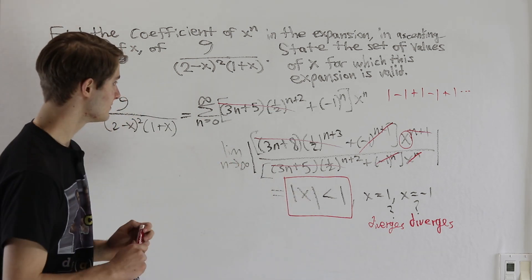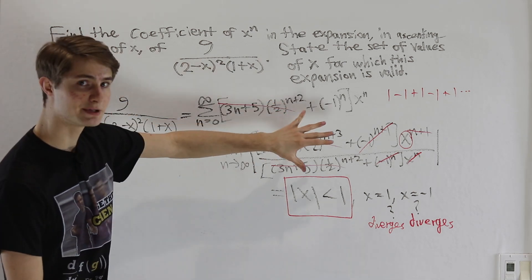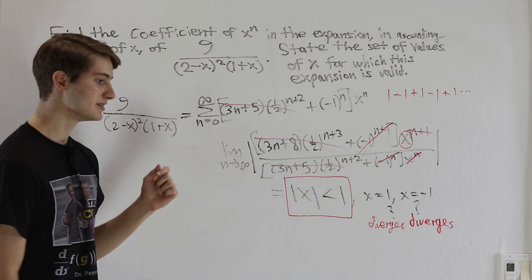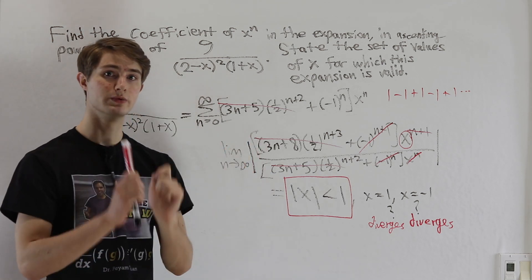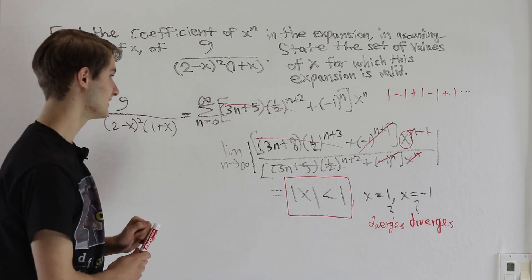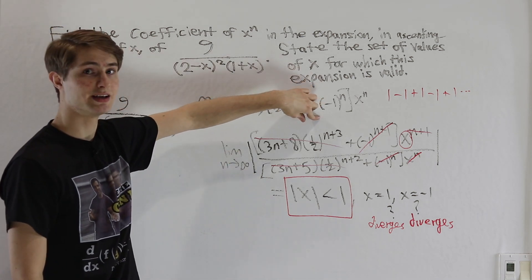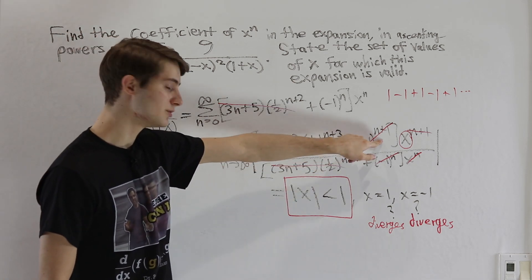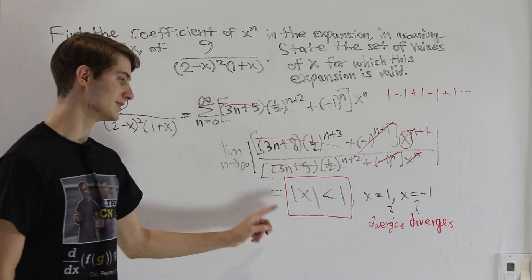When looking at these types of problems, especially with very complicated-looking expressions and limits, it helps to step back and think about which parts of the expression are really important and which can be set aside. Here, by recognizing that (one-half) to the n gets small very rapidly, we could focus on the (negative 1) to the n term that dominated — and that led us directly to our answer.